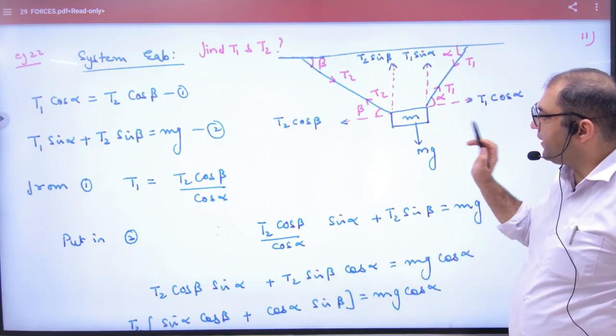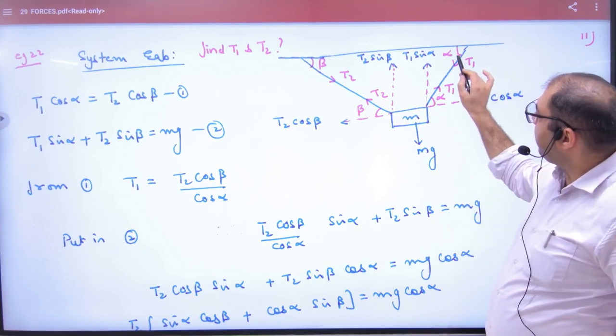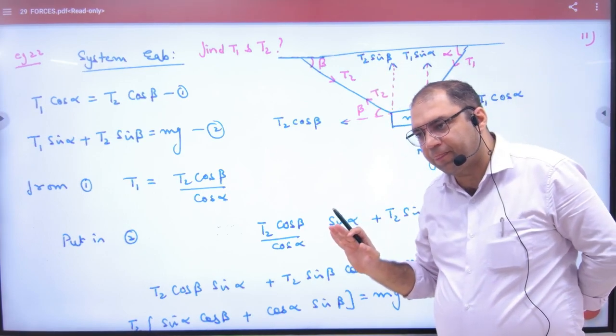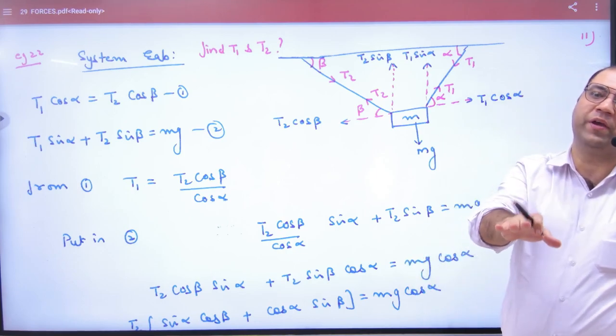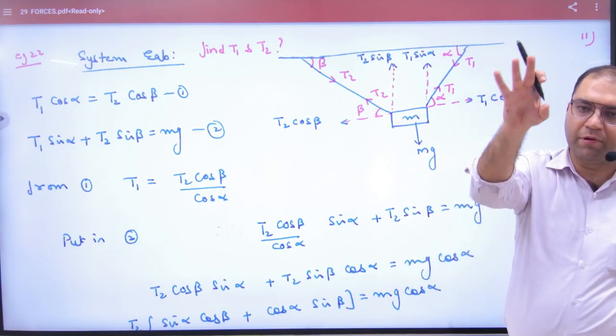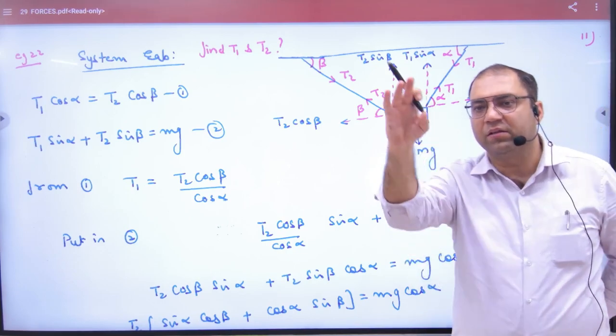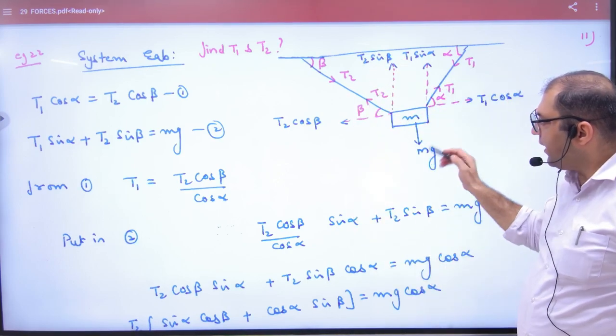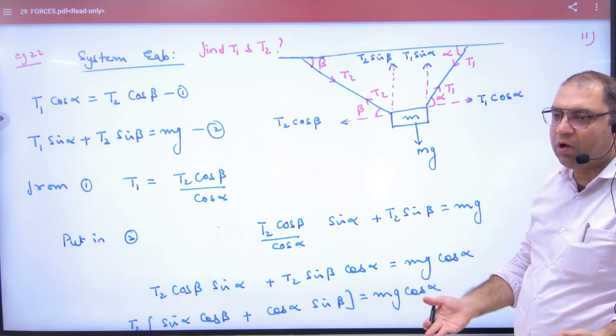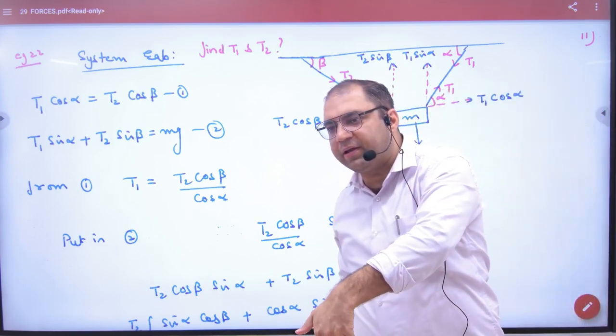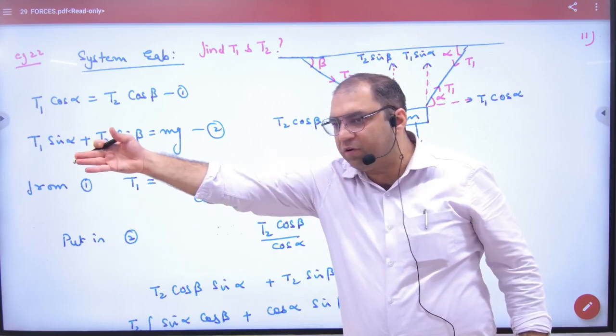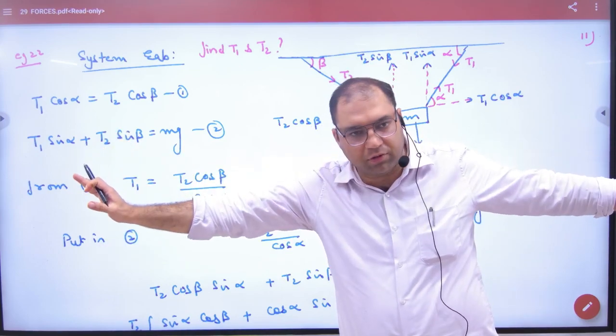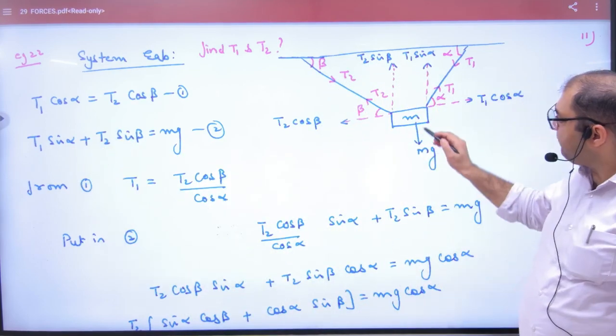The strings make angles alpha and beta, and this system is in equilibrium. Equilibrium means the net force is zero, so the forces must be balanced.